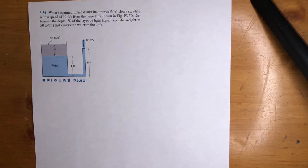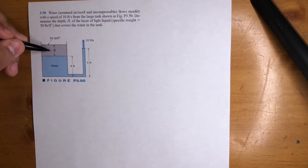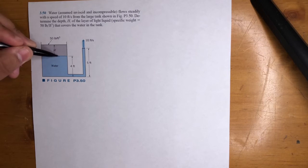Alright, so for this one, we got to go ahead, same thing, Bernoulli equation. So we got to find this height ultimately, but we can't do that without knowing the pressure at this point. Why?